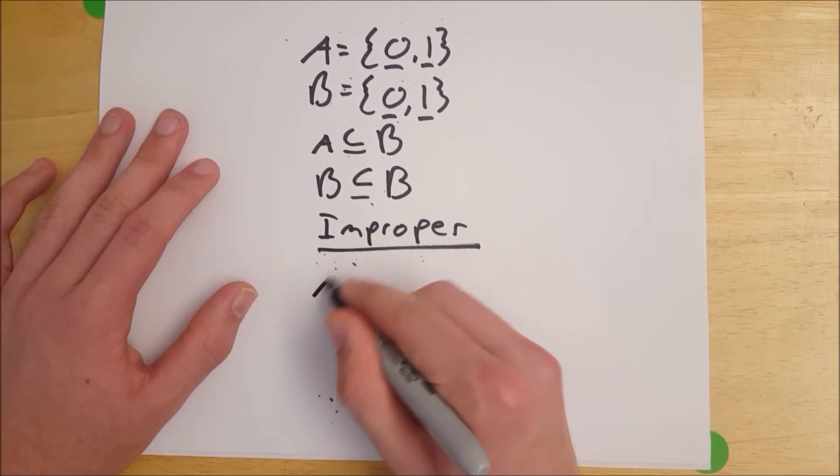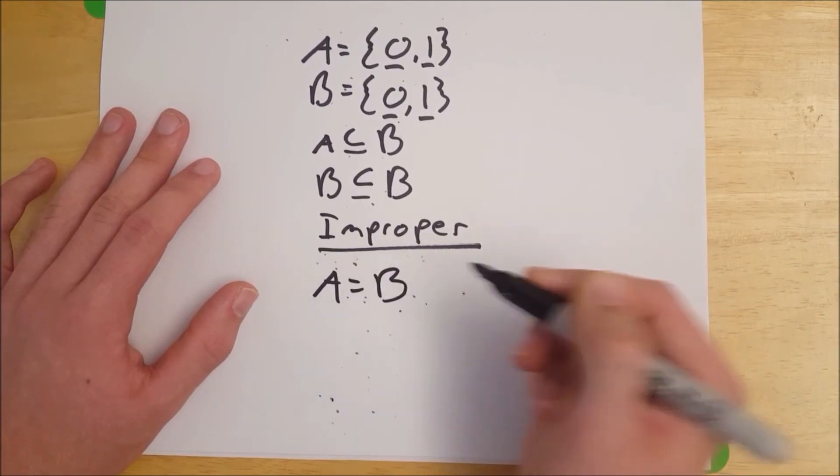So to be an improper subset effectively means that the two sets are equal. So if A is an improper subset of B, then A is equal to B.